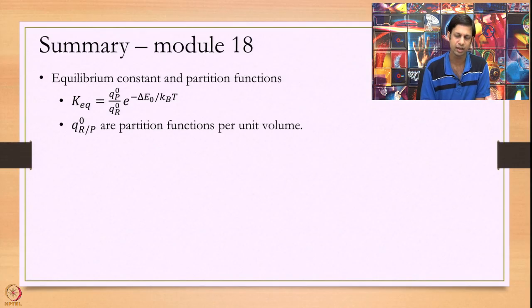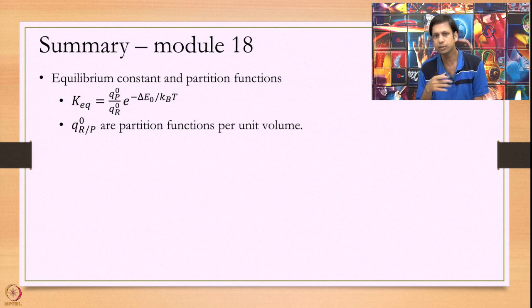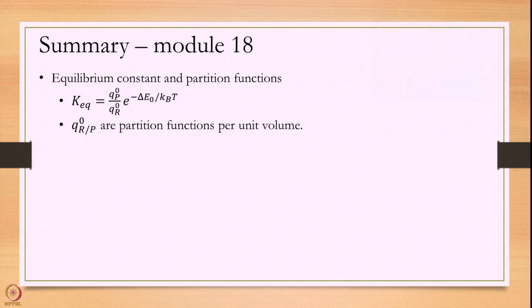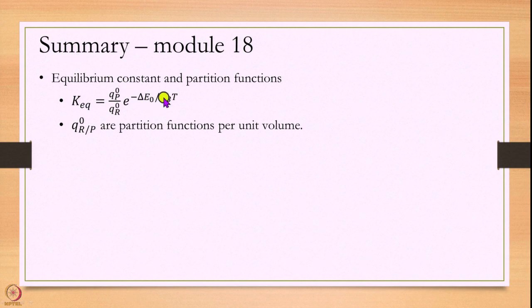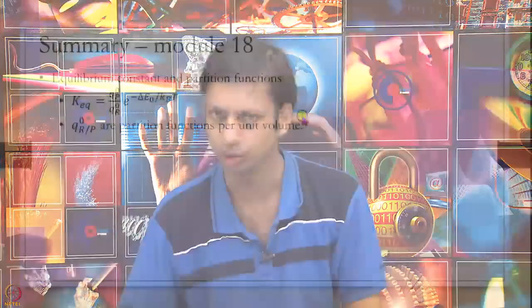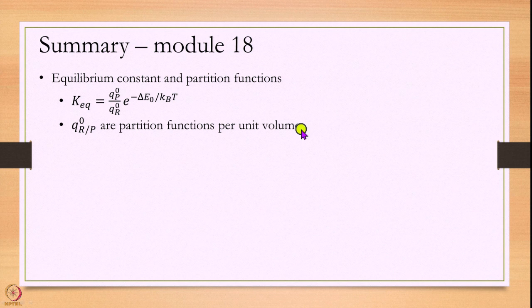In summary, today we have looked at the relation of the equilibrium constant in terms of partition functions. This is the formula we derived today. A more rigorous formula can be found in Atkins, and these partition functions are per unit volume, divided by Avogadro's number if working in molar units. Thank you very much.